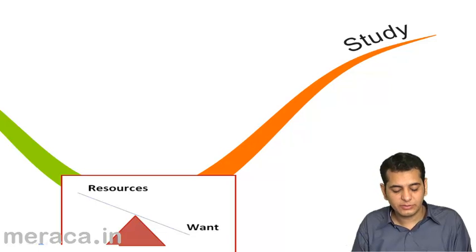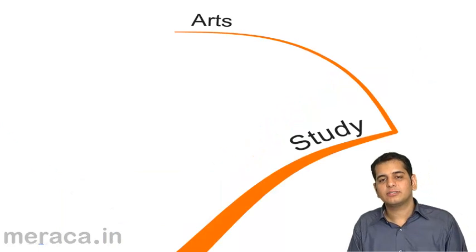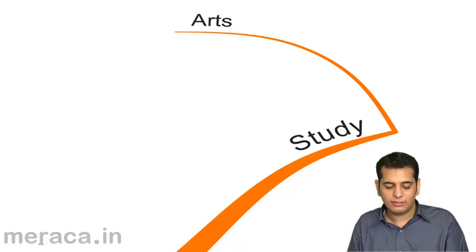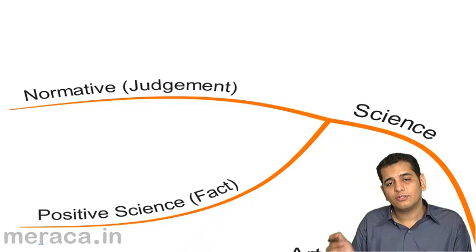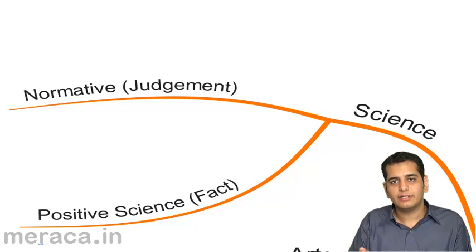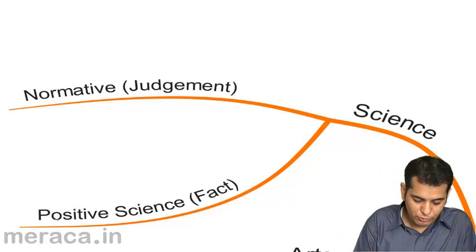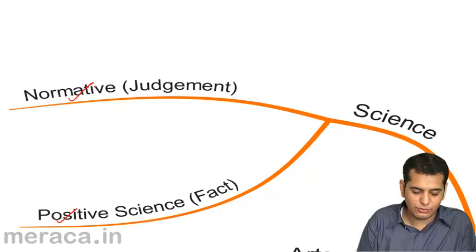Then we saw how economics is studied. Economics is studied as a science and arts. If we study economics as a science, we study it as a positive science, we study it as a normative science.